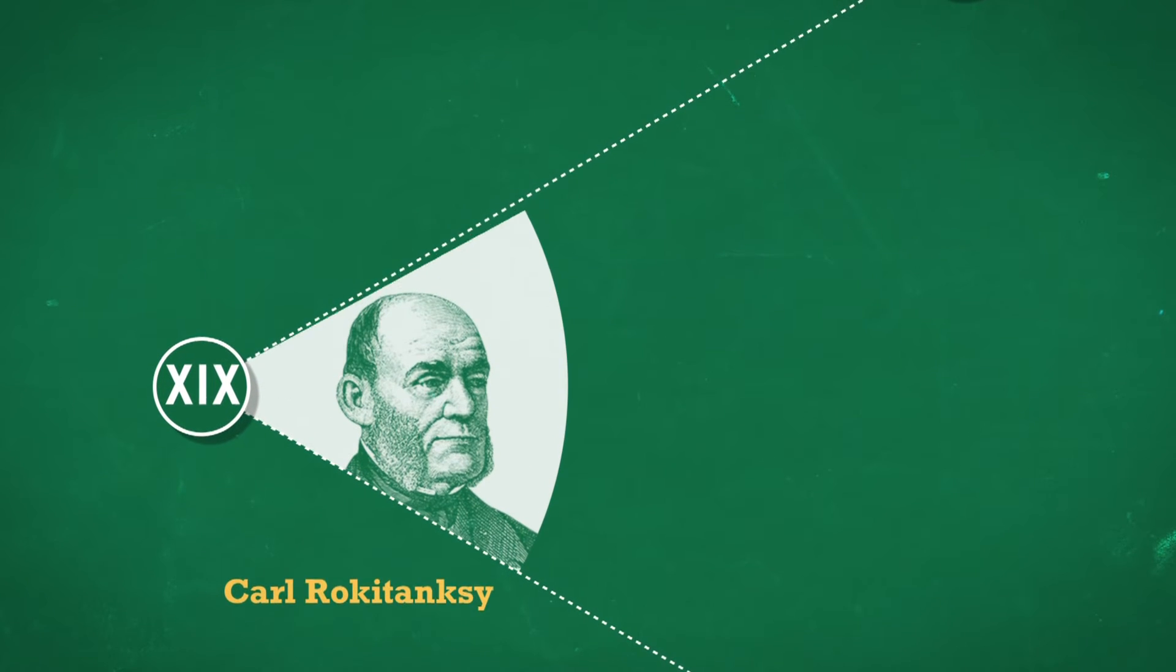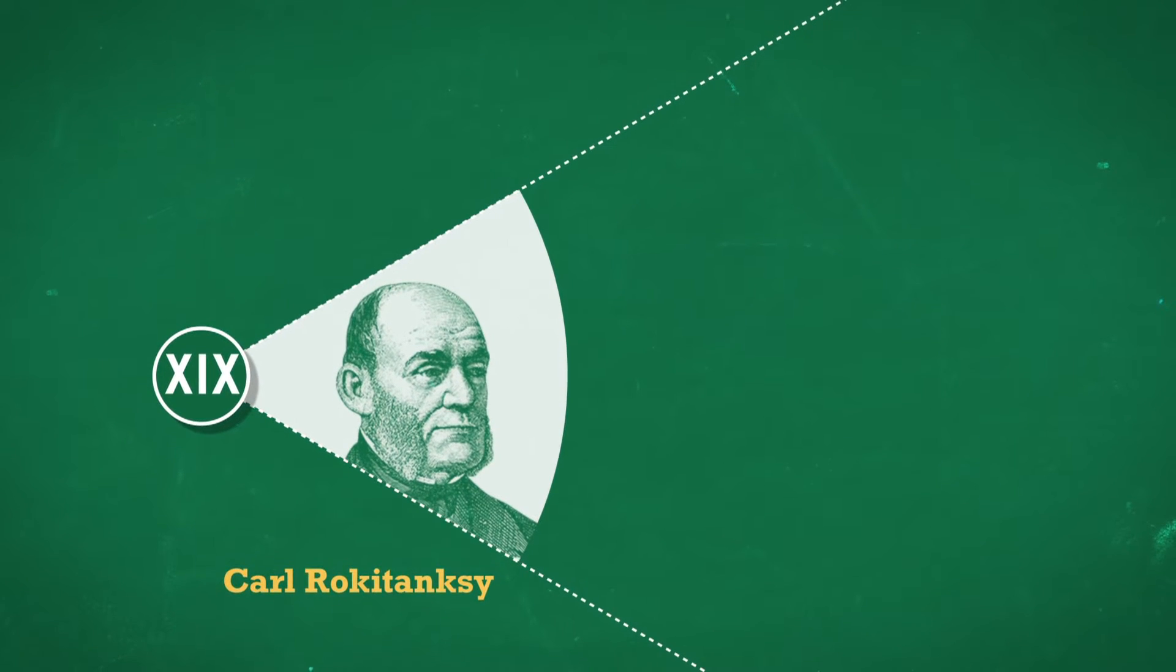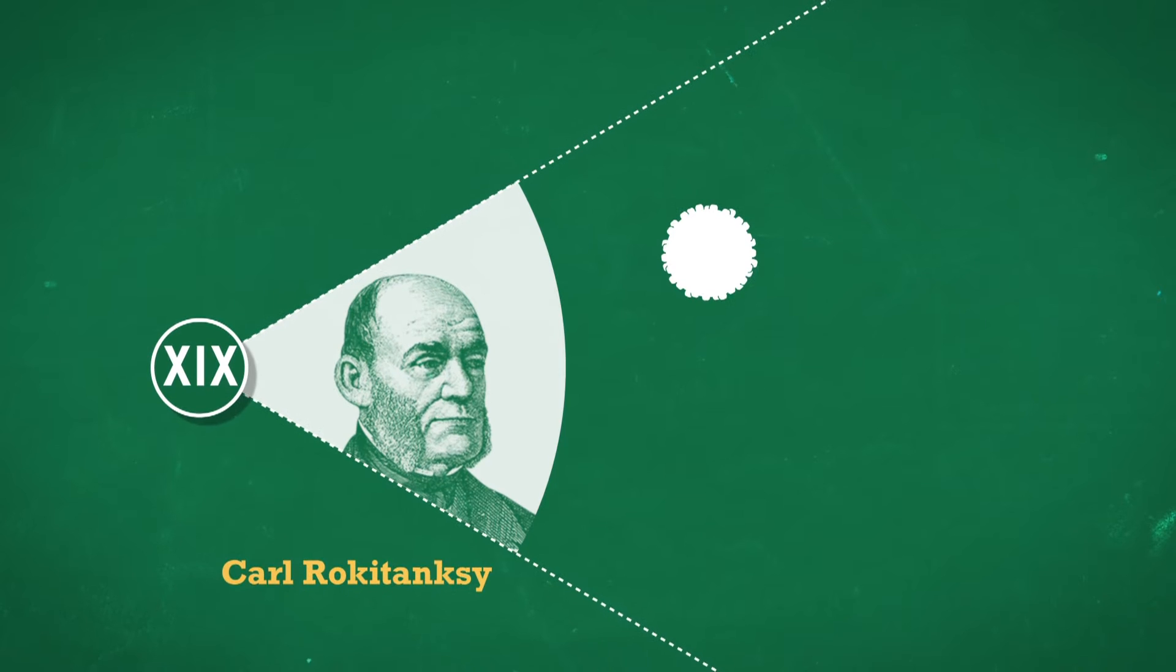In the middle of the 19th century, Czech Karl Rokitansky was the first to describe the hepatitis virus.